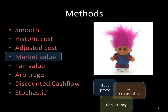When it comes to methods, the way I remember the various types is the acronym SHAM FADS. The various ways are: Smoothing, Historic costs, Adjusted costs, Market value, Fair value, Arbitrage, Discounted cash flow, and Stochastic. You need to know these methods backwards. In certain exam questions, you might have to mention a few points on each of these eight methods.